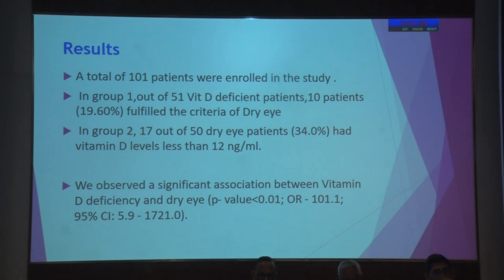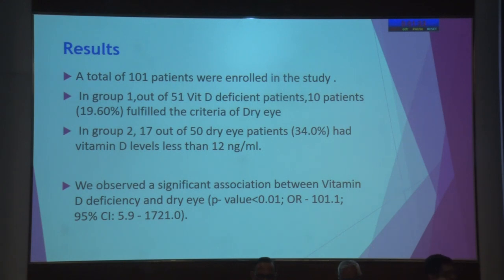In Group 1, out of 51 vitamin D deficient patients, 10 patients — that is 19.6% — fulfilled the criteria for dry eye. In Group 2, 17 out of 50 dry eye patients had vitamin D levels less than 12 nanograms per dL. We observed a significant association between vitamin D deficiency and dry eye, with a p-value less than 0.01.